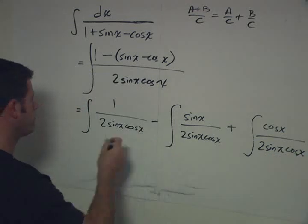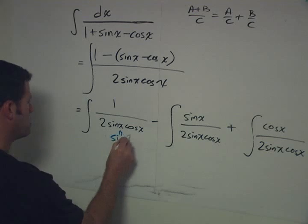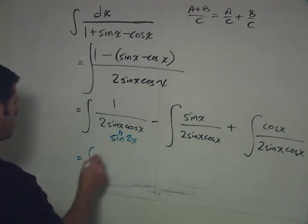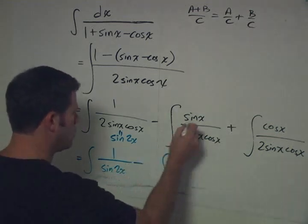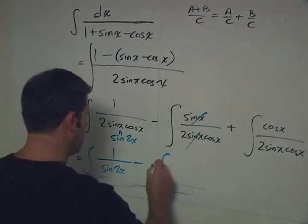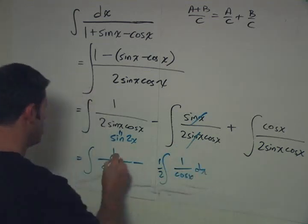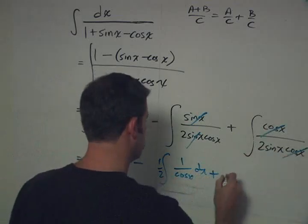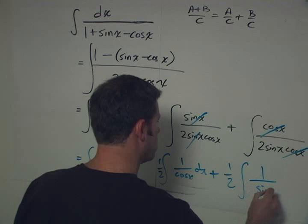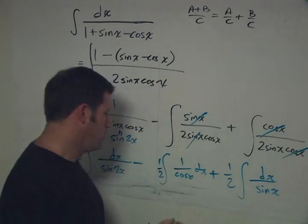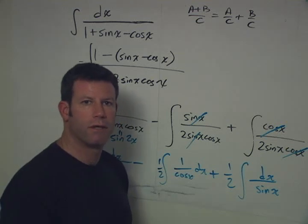Now look what we can do. The denominator 2 sine x cosine x is the same as sine 2x. So we can say this is the integral of 1 over sine 2x, minus — since the sines cancel — one half times 1 over cosine x dx, plus — since the cosines cancel — one half times 1 over sine x dx.